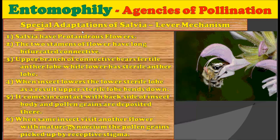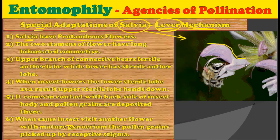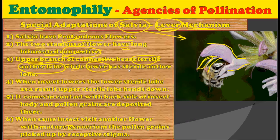While talking about entomophilous flowers, we must take special note of the adaptations in the salvia plant, as it shows the lever mechanism — the most discussed adaptation in entomophilous plants. Salvia has protandrous flowers. In the flower there are two stamens with a long bifurcated connective. The upper branch of the connective bears the fertile anther lobe, while the lower branch has the sterile anther lobe.